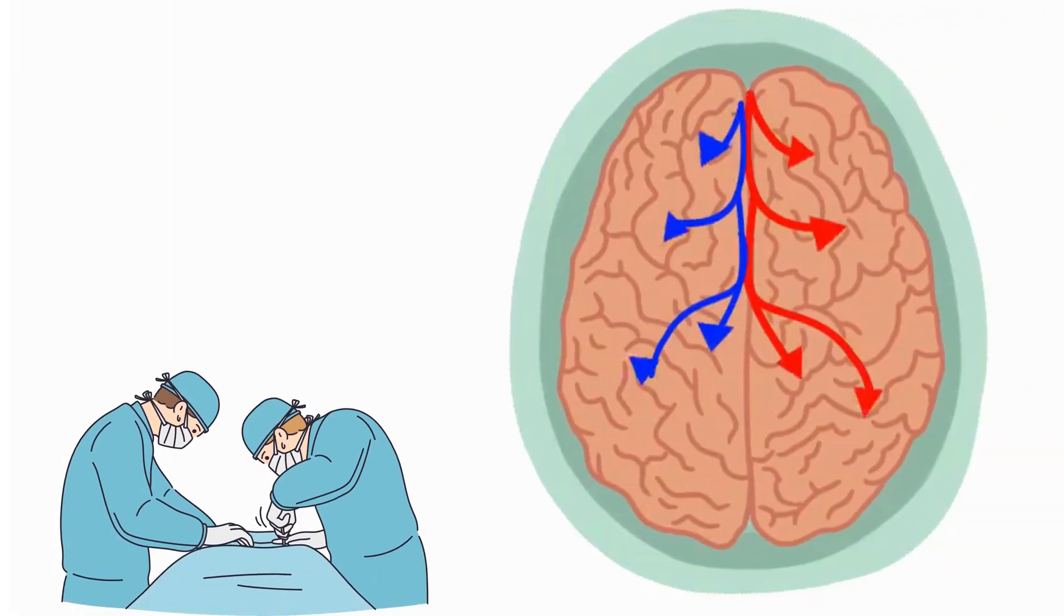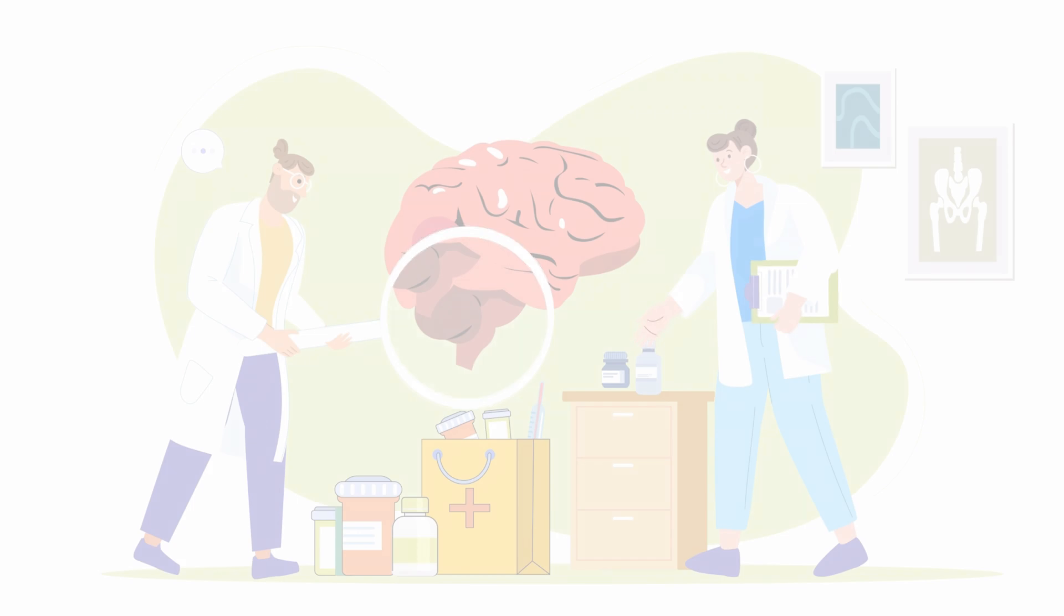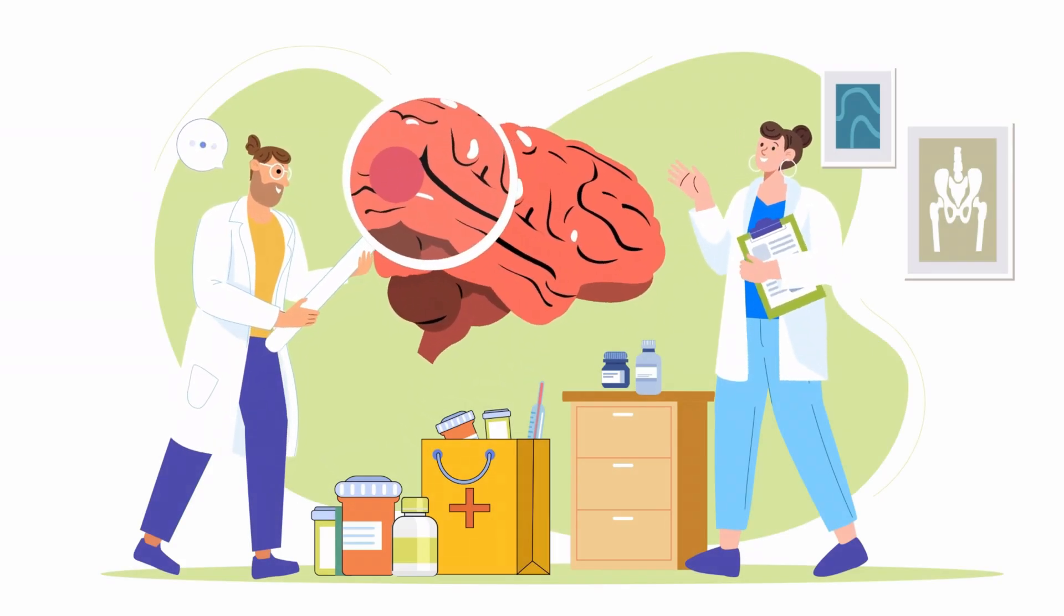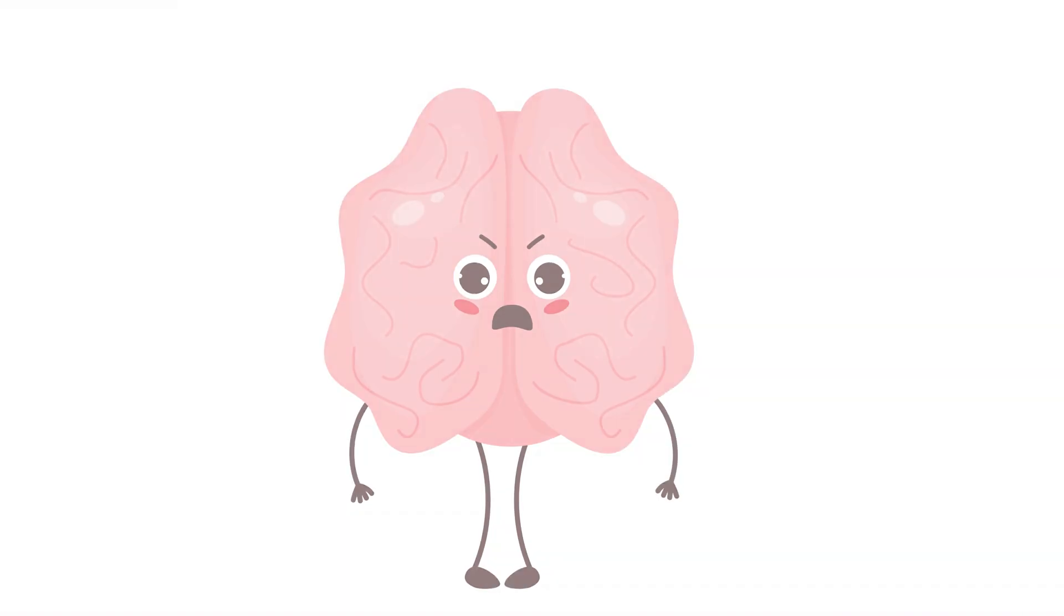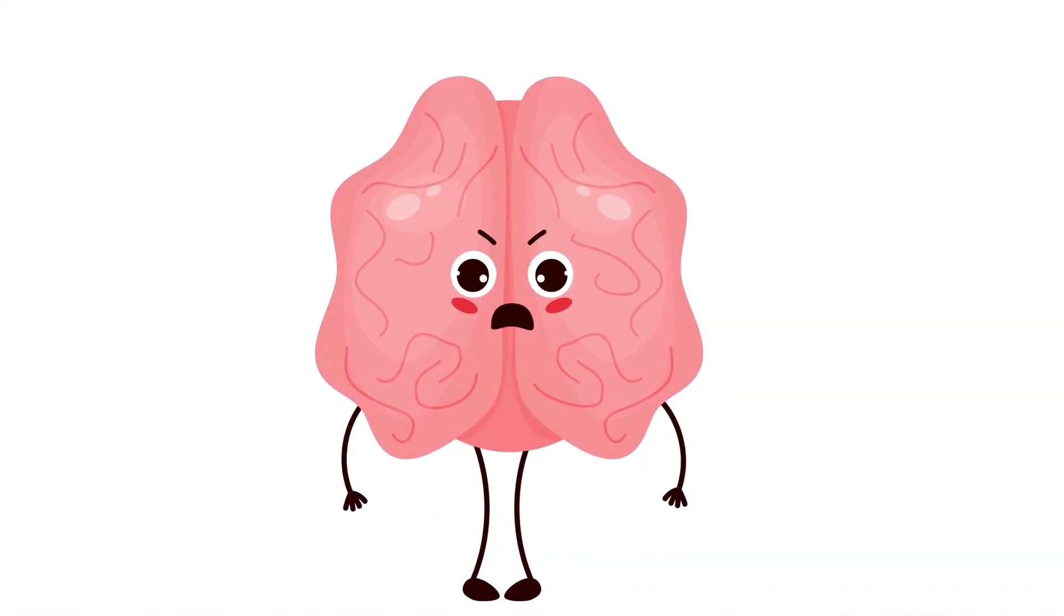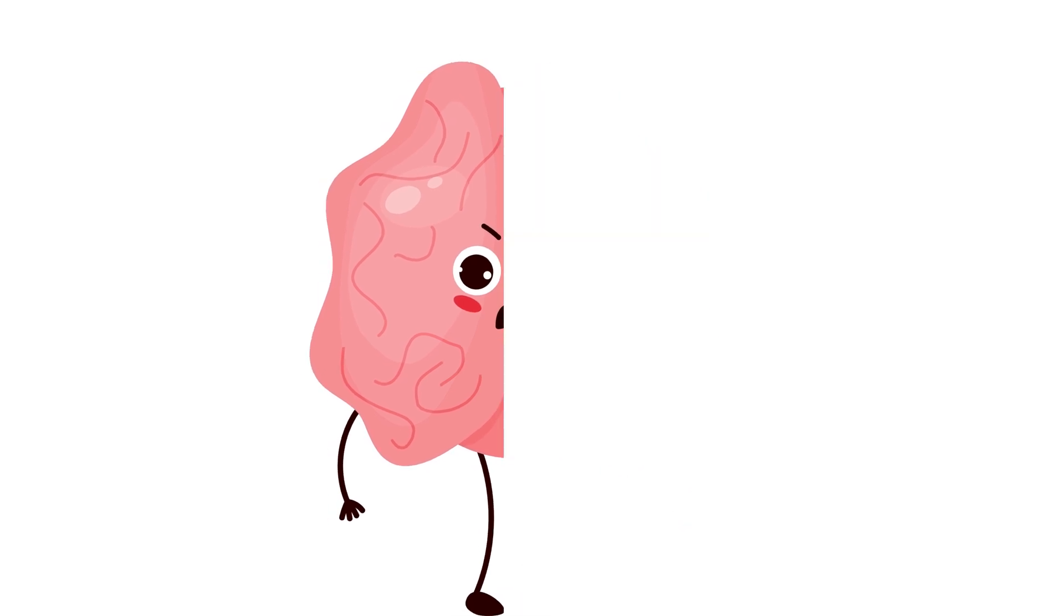During the surgery, one hemisphere is carefully removed, leaving the other intact. What would happen next? All right, let's dive into the nitty-gritty of what happens when our brain gets a major makeover. Imagine your brain as a dynamic duo, with each hemisphere playing its own unique role. But what if one half gets the pink slip? How does the brain adapt to this major shakeup?